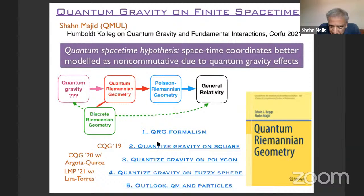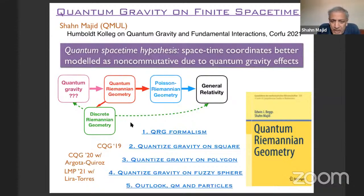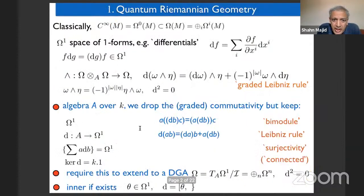So this is the plan of the talk: I'll explain the formalism, give you a model of quantum gravity on a square, a model on a polygon, and quantum gravity on a fuzzy sphere, and then we'll have discussion. This paper is joint work with Agota Quiroz, and this other paper is joint work with Lira Torres. I haven't got much time so I'm going to zoom through the formalism, but you can find everything in the book.